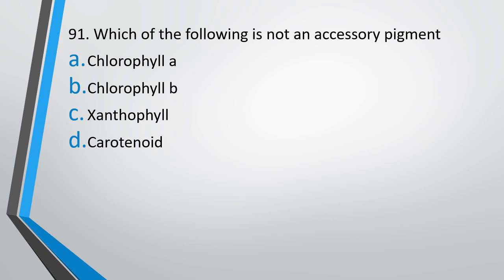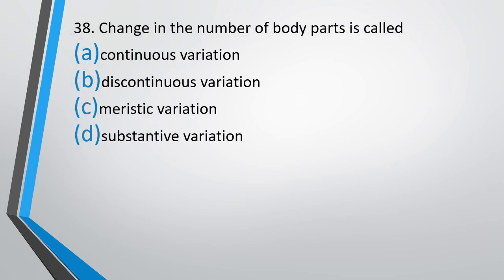Question number 91. Which of the following is not an accessory pigment — chlorophyll A, chlorophyll B, xanthophyll, or carotenoid? The correct answer is option A — chlorophyll A is not an accessory pigment. Question number 38. Change in number of body parts is called: continuous variation, discontinuous variation, meristic variation, or substantive variation. The correct answer is option C — meristic variation.